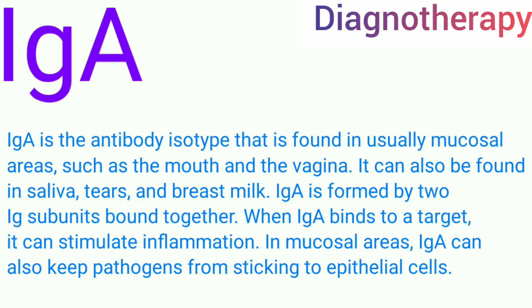IgA is the antibody isotype that is found in mucosal areas such as the mouth and the vagina. It is also found in saliva, tears, and breast milk. IgA is formed by two Ig subunits bound together. When IgA binds to a target, it can stimulate inflammation. In mucosal areas, IgA can also keep pathogens from sticking to epithelial cells.